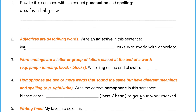Question 3. Word endings are a letter or group of letters placed at the end of a word. For example, 'jump' with the word ending '-ing' becomes 'jumping.' 'Block' with the word ending '-s' becomes 'blocks.' Now write '-ing' on the end of 'swim.'